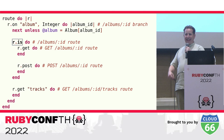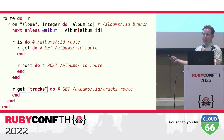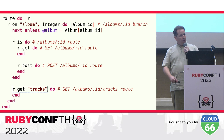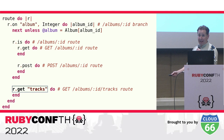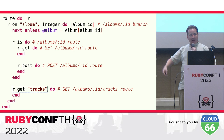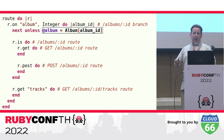Now assume the request path is '/albums/1/tracks'. In that case r.is will not match and routing will continue to the next expression: r.get with an argument of 'tracks'. This will only match if the request method is GET and the remaining part of the path is '/tracks'. So if the request path is '/albums/1/tracks' and the method is GET, this will match because '/albums/1' was already matched by the r.on call, and r.get matches the remaining '/tracks'.